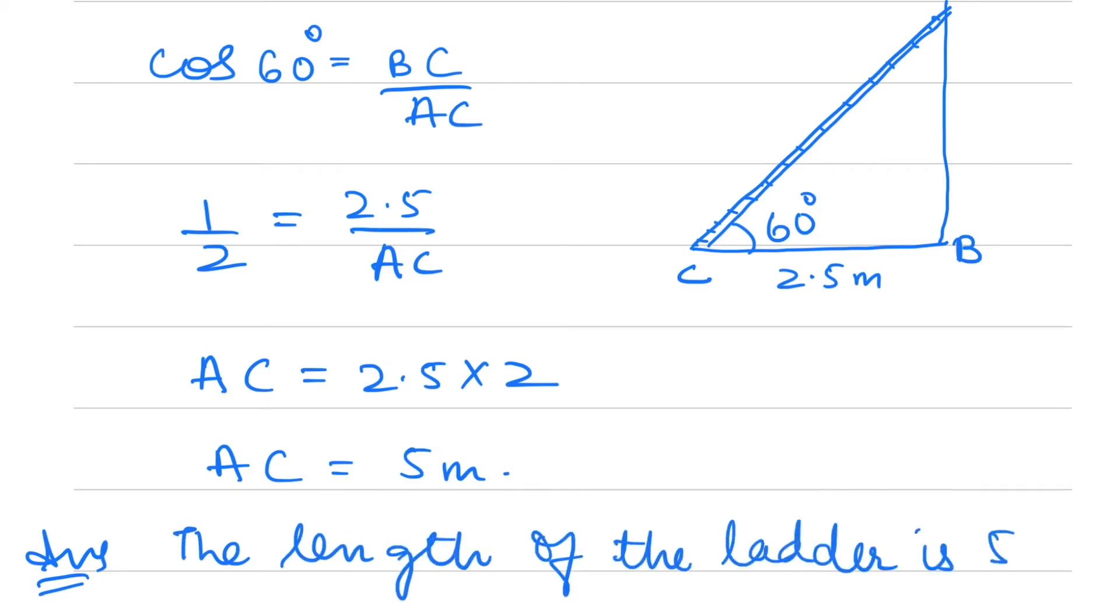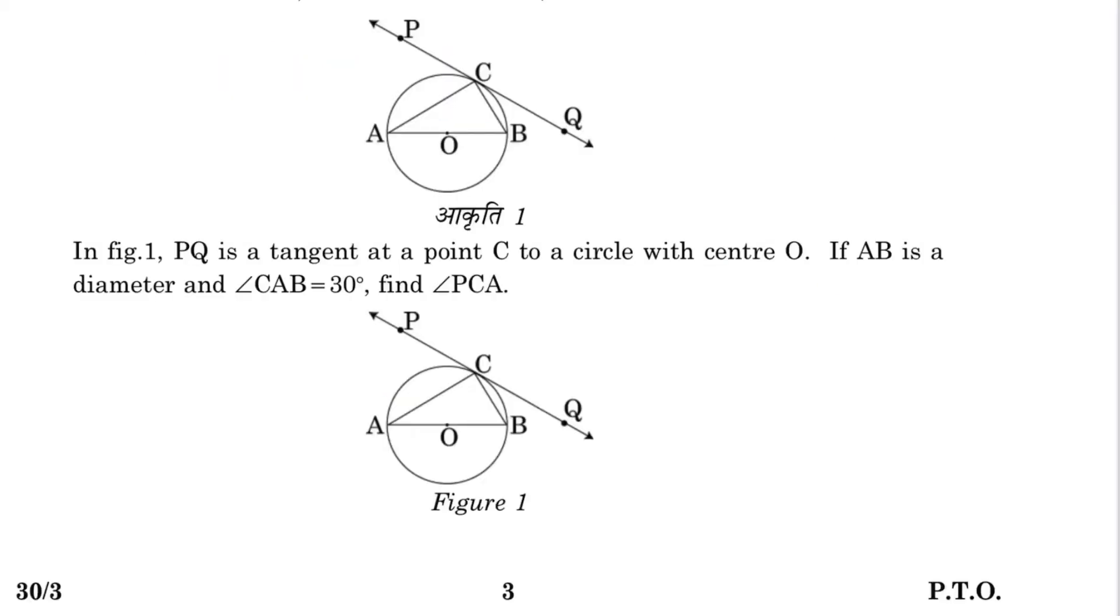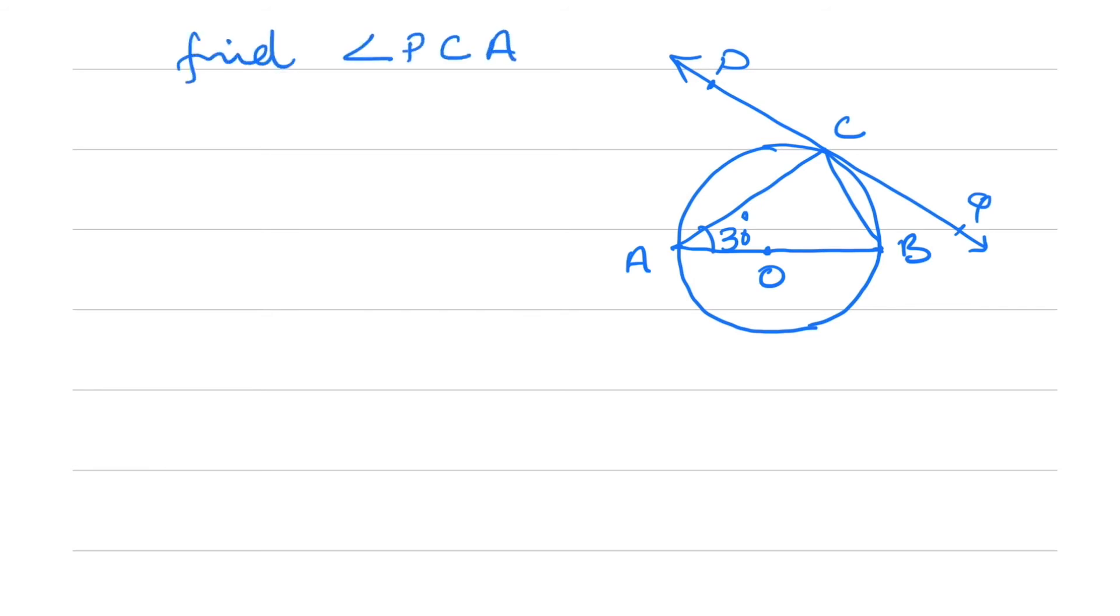Question number three: We are given a circle with center O. AB is the diameter, PQ is a tangent at point C, and angle CAB is given as 30 degrees. We have to find angle BCA. Let's join OC.